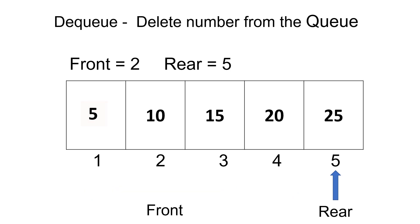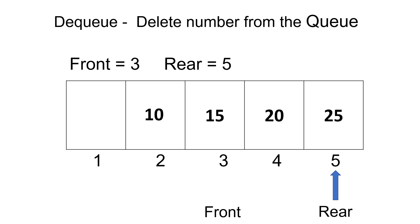Now let's delete an element from the queue. Deletion happens at the front end, so just increment front by 1 and the element will get deleted. We can consider our queue from the front pointer to the rear pointer, and not the entire array. Again, to delete another element from the queue, just increment front by 1 — it will point to index 3 and the number will get deleted from the queue.